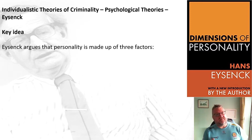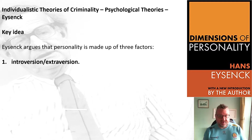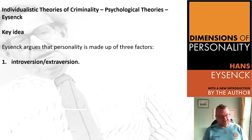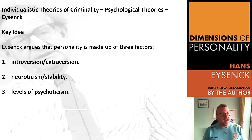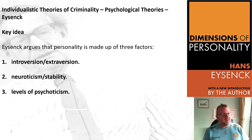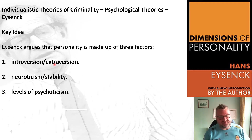Eysenck argued that your personality is made up of three distinct factors: first, how introverted or extroverted you are; second, how neurotic or stable you are; and third, how psychotic you are. These are known as P for psychoticism, N for neuroticism, and E for extroversion — the PEN model.